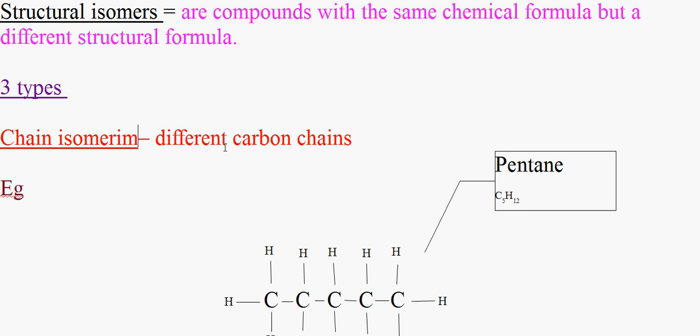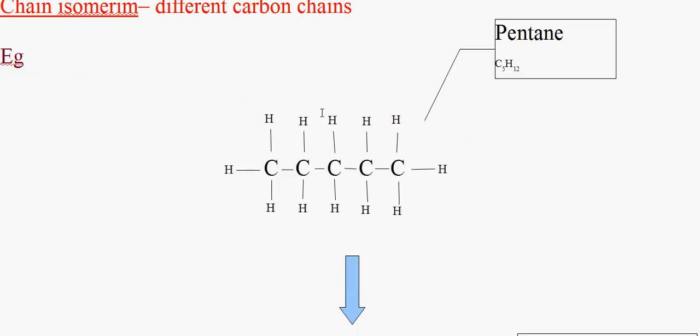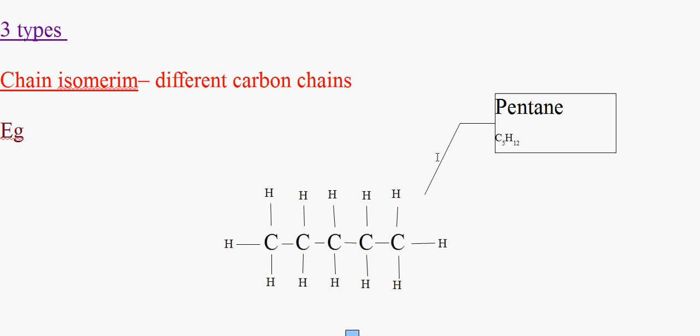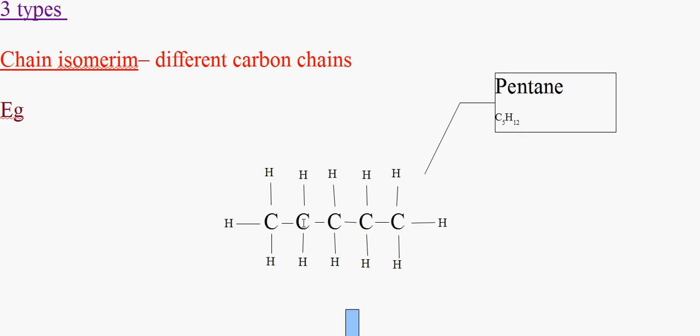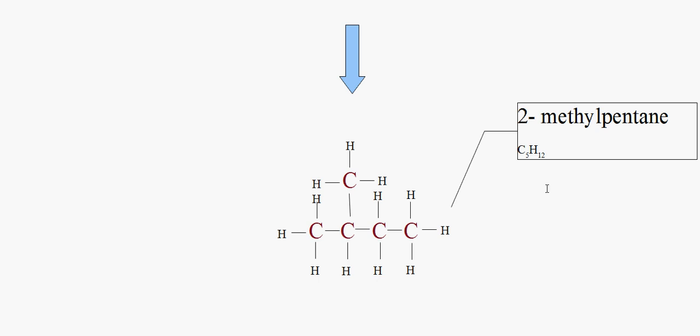Which have different carbon chains. So if you look here, here's pentane, C5H12, where this is 2-methylbutane. It has the same chemical formula, C5H12,